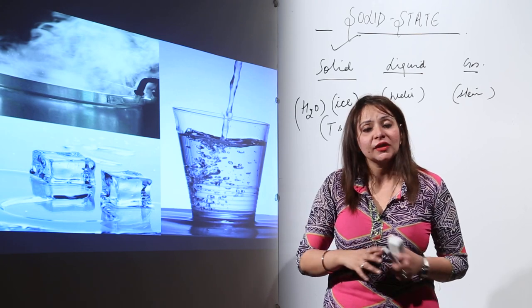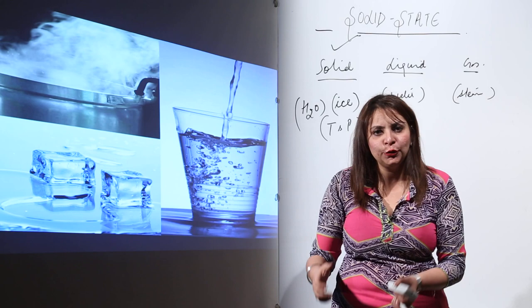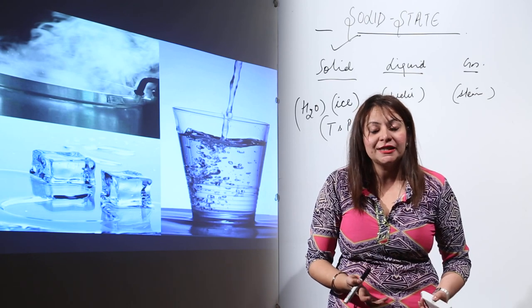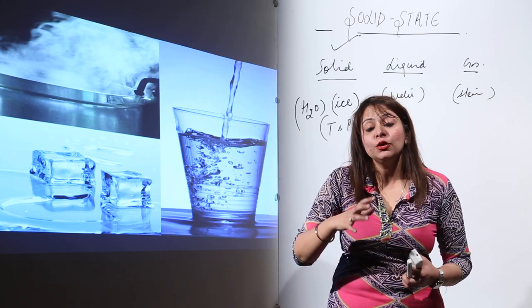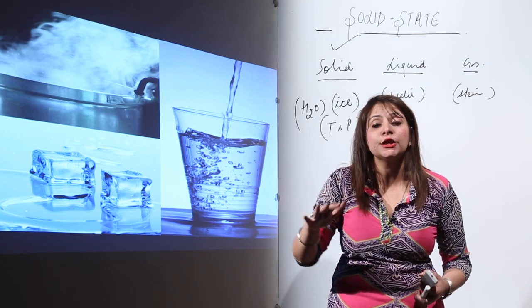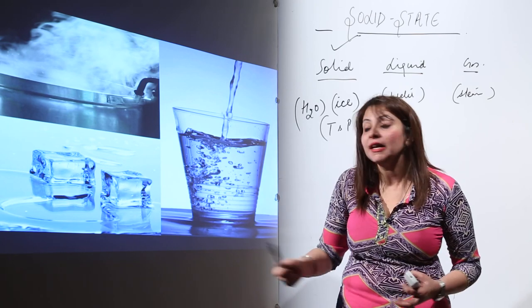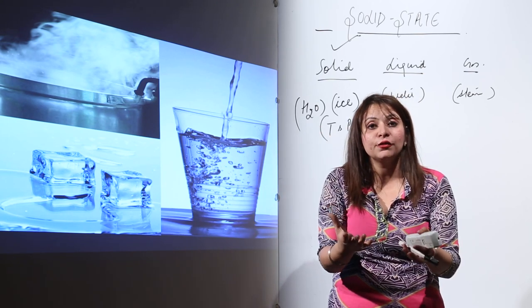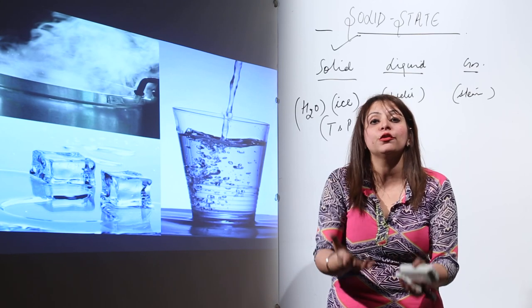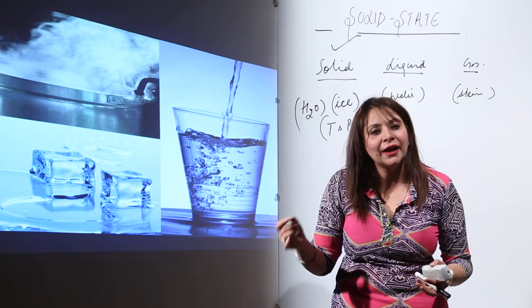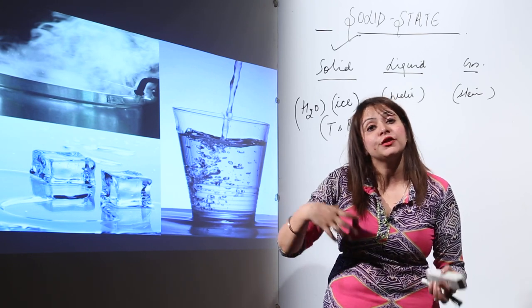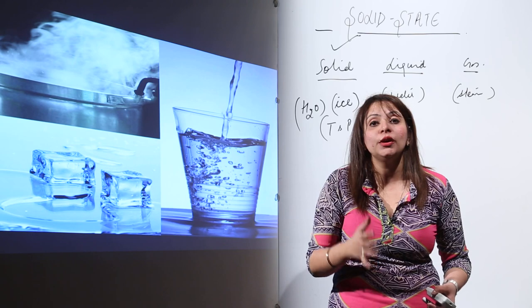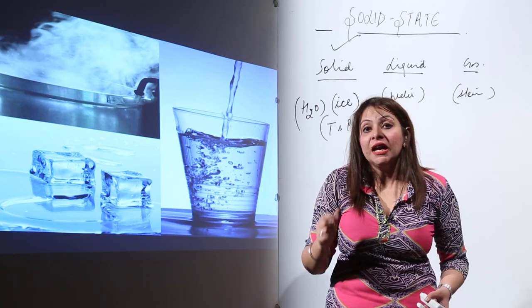In a classroom you see a marker, a remote, a whiteboard, a chair, and tables — these are all different solids. These different solids have different applications: the marker is used for writing, the whiteboard is the surface to write on, the chair is meant for sitting, and the table is where you keep your copies and write. So different solids have different applications, even though they share the same general state.